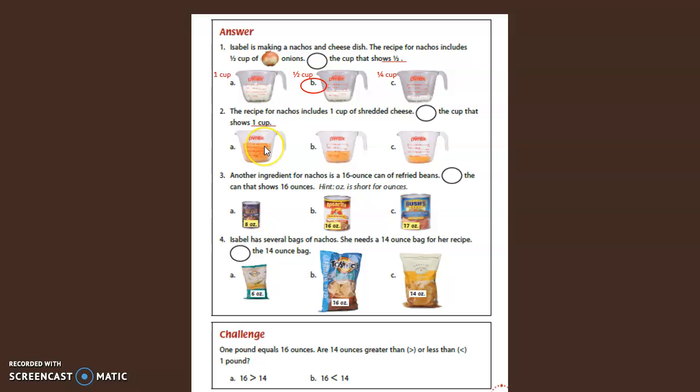So this cup is one-half cup. This cup is half a cup. This cup is one-fourth cup. So again, we're going to circle the cup that shows one cup. Is it A, B, or C? Yes, it's A. Great job.